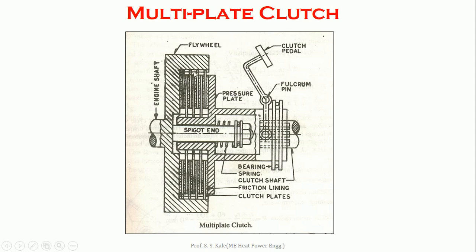To transmit power again, release the force from the clutch pedal. The spring then gives force back on the pressure plate, bringing the friction plates into contact, and power is transmitted again. This is the working of the multi-plate clutch. The multi-plate clutch is most widely used where space limitation is a concern, such as in two-wheelers. The basic advantage is that it occupies less space while providing high power transmission.